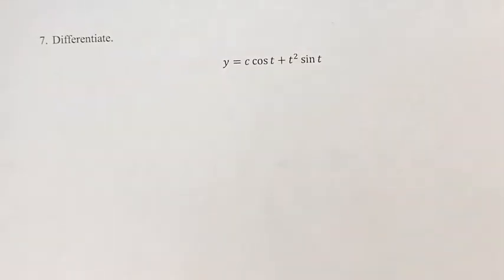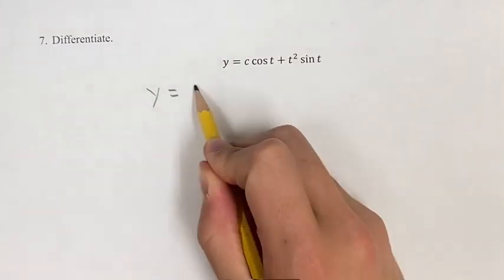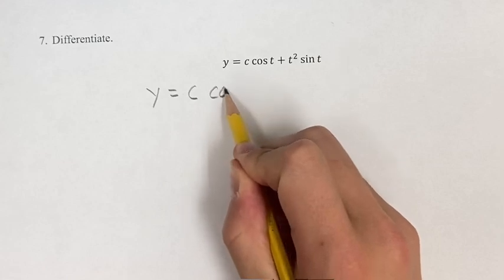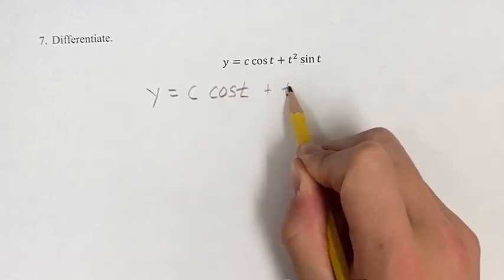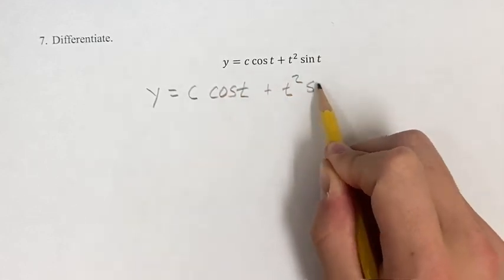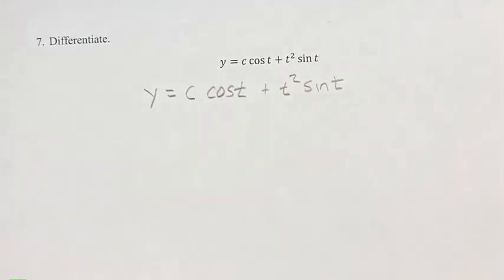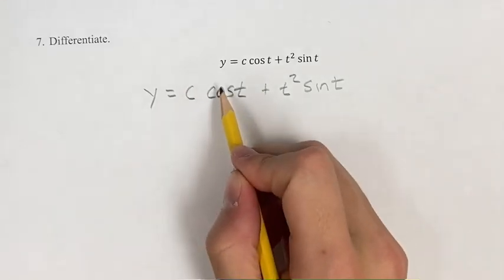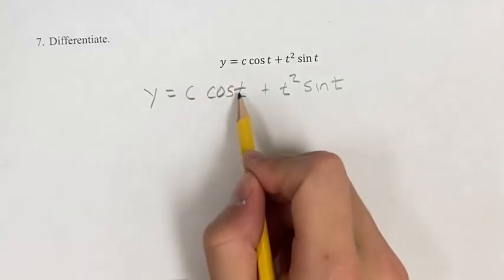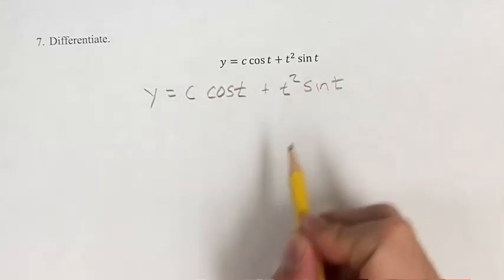This problem is differentiating the function y is equal to c cosine t plus t squared sine t. For this first term, we're going to take the derivative of that, and we're going to add it to the derivative of the second term.